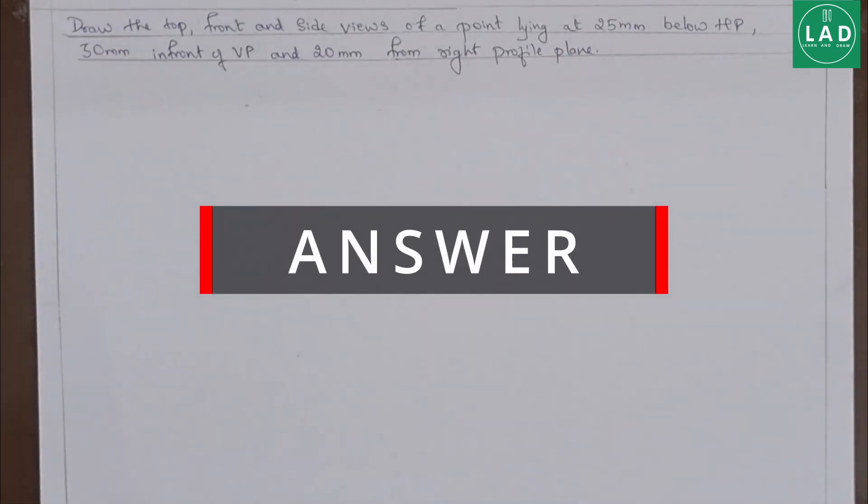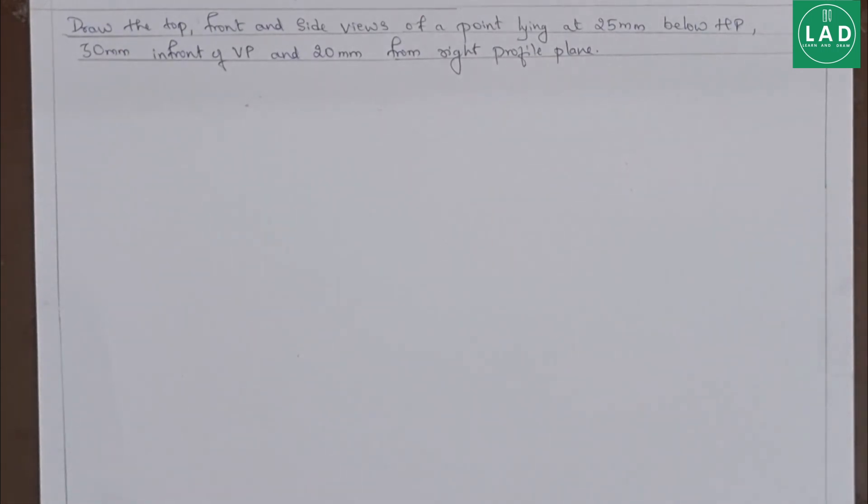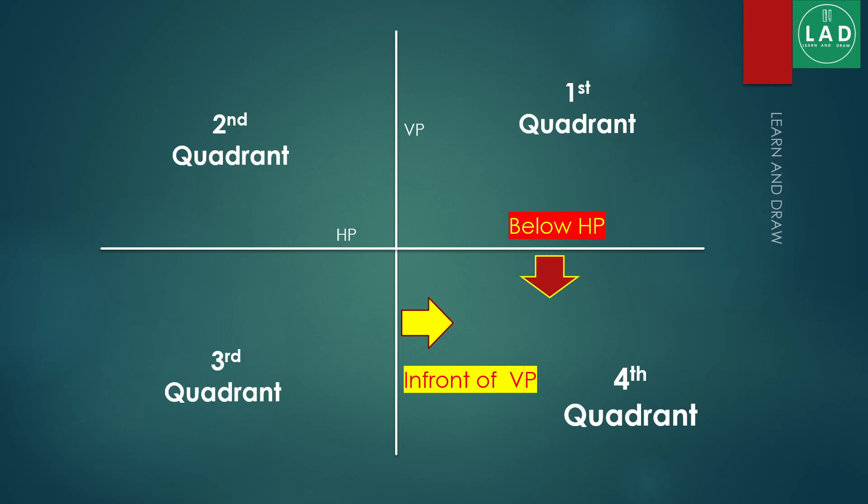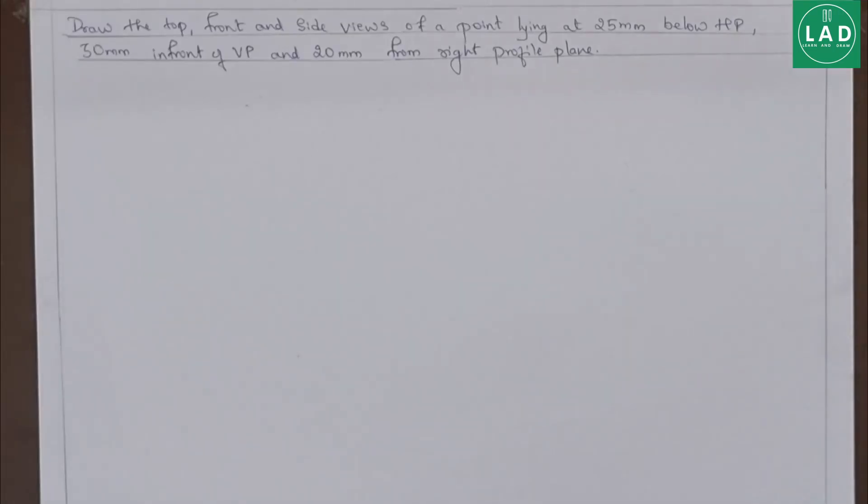From the problem, we can know that the point is below HP and in front of VP. That is, the point is lying in the fourth quarter. That is, we have to adopt the fourth angle projection for solving this problem.